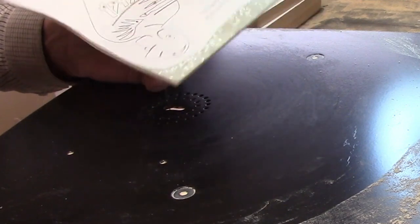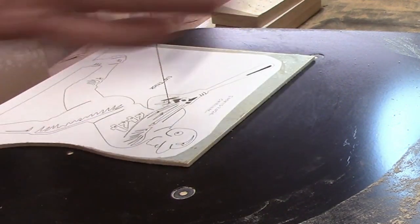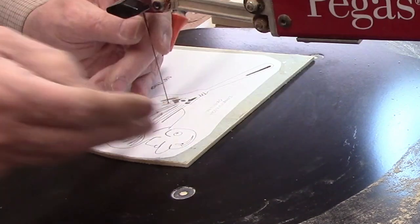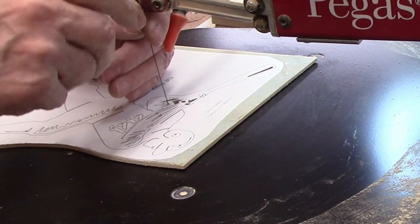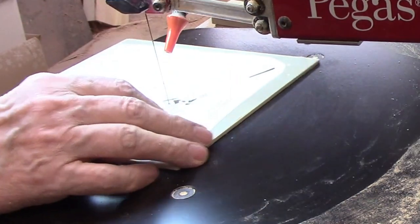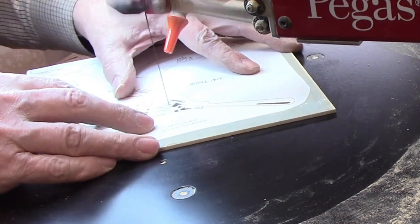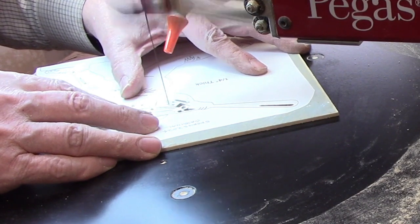Even with the number three blade, I had to slow the scroll saw down to its slowest speed. It is unlikely you could make this project on a saw without a very low speed control. This pattern will require more patience than most because of the number and small size of the inside cuts, so don't try to knock it out in a rush.